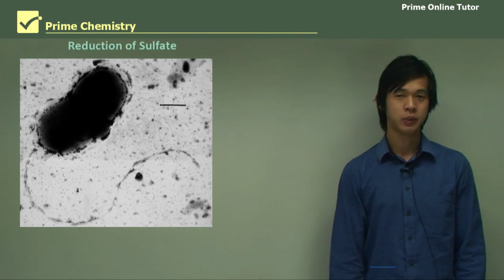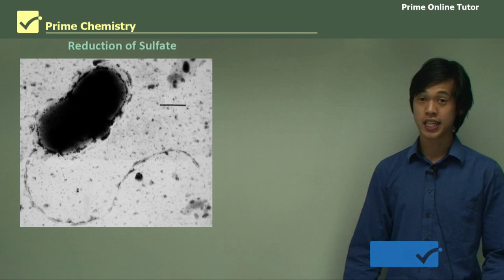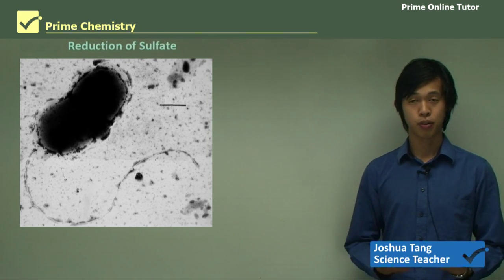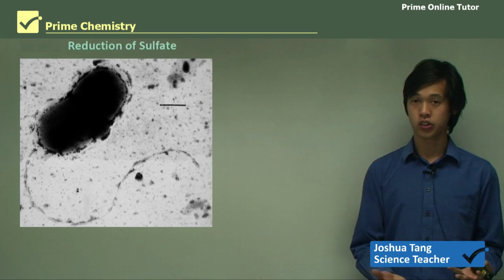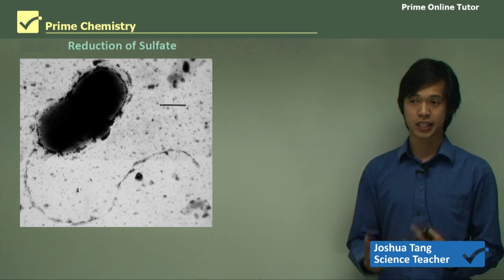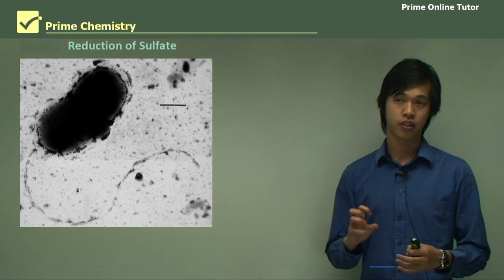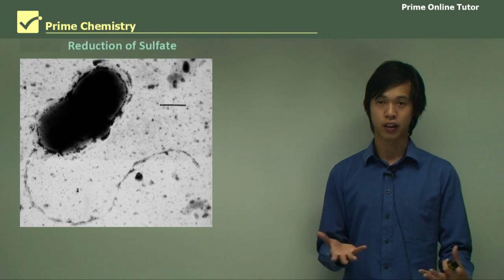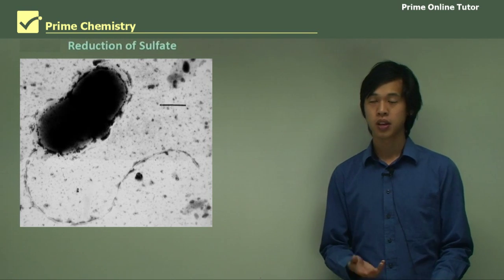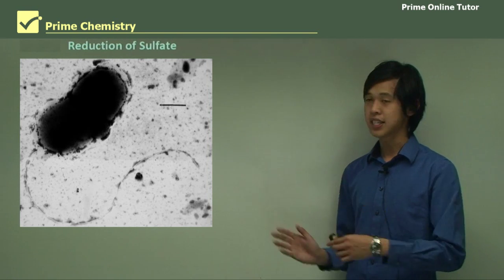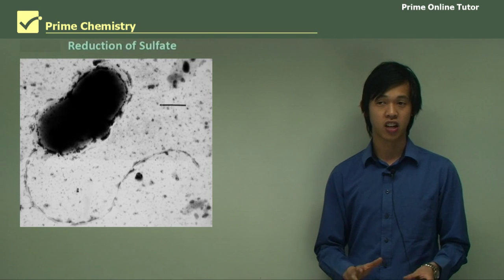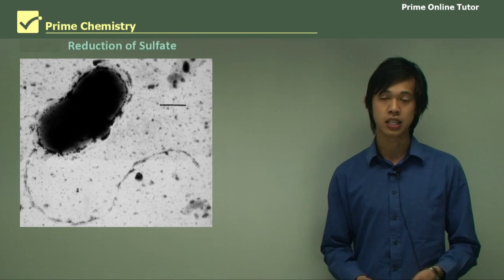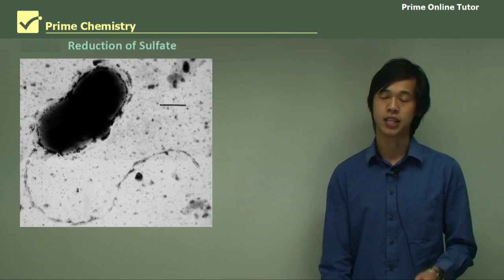Hello everyone, welcome again. Today's lesson will be on shipwrecks and salvage. In the previous lesson, we looked at bacterial corrosion and bacteria, how they interact with each other and the environment to produce energy. In today's lesson, we're going to look at the chemistry of their metabolism and how that interacts with steel to give us bacterial corrosion.